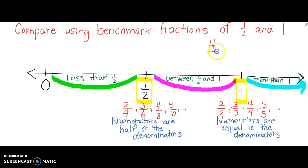What about four fourths and seven eighths? Four fourths is the same as one whole — it's right there, exactly a whole. Seven eighths is nearly a whole; remember, a whole is the same numerator as the denominator — eight eighths — but seven eighths is not quite a whole. Seven eighths would be somewhere between one half and one whole, probably even closer to one on my number line. Because four fourths is exactly one and seven eighths is less than one, four fourths is greater than seven eighths.